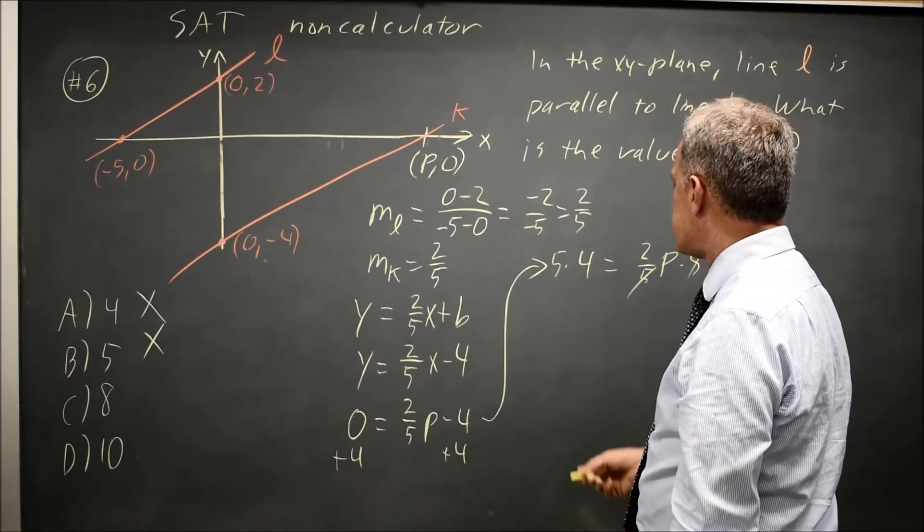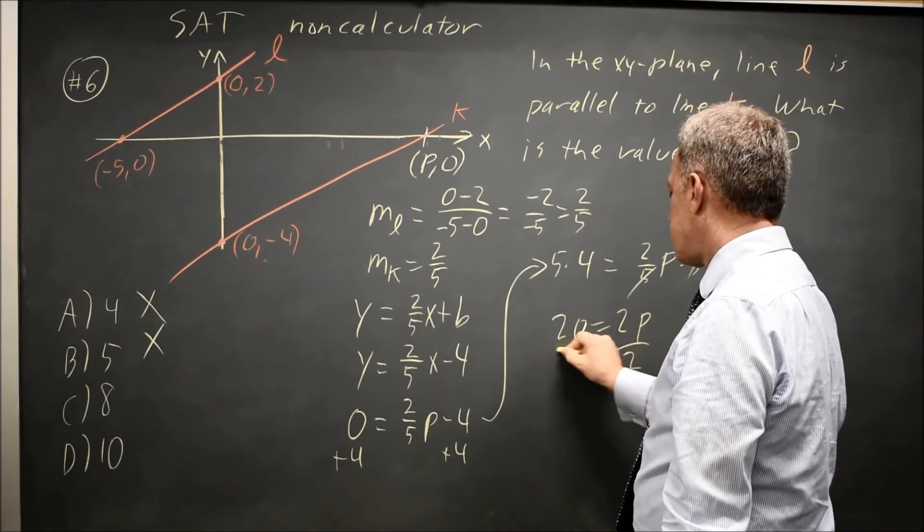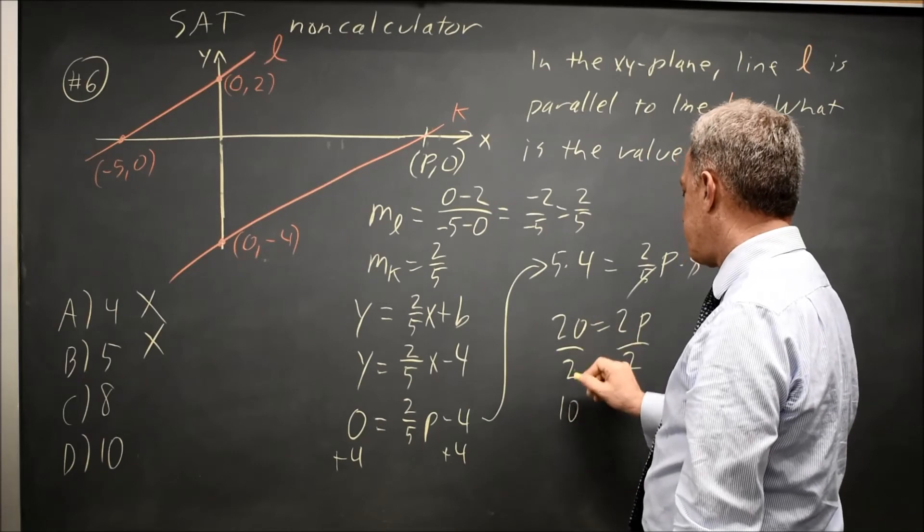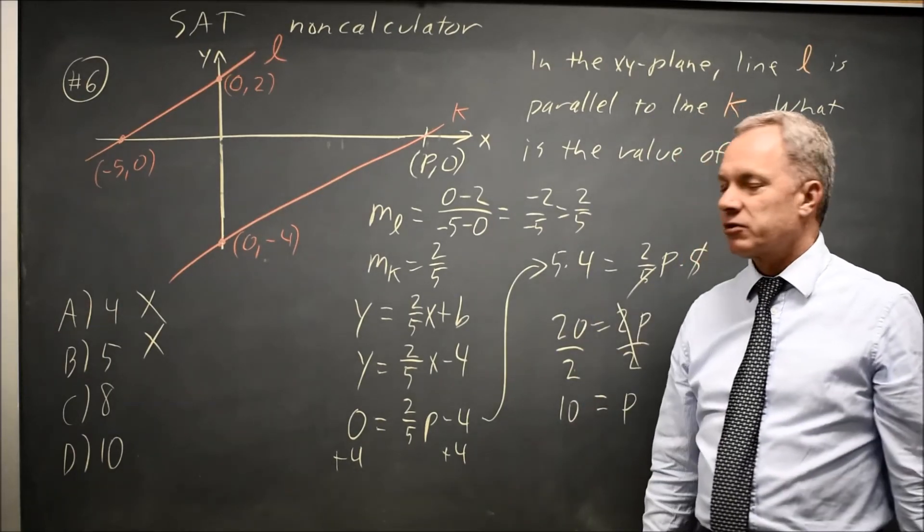So 20 equals 2p, divide both sides by 2, and I get 10 on the left, 20 over 2 is 10. 2 over 2 is 1, so I just have plain p by itself on the right.